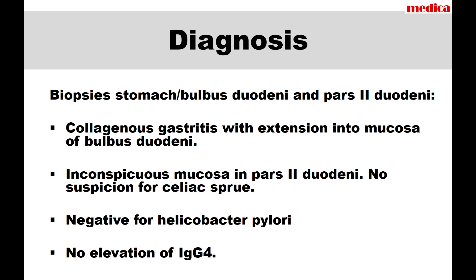In conclusion, our diagnosis was collagenous gastritis extending into the bulbar duodenum. Mucosa in pars II of the duodenum was inconspicuous without indication for celiac sprue. It was negative for Helicobacter pylori, with no elevation of IgG4. Ileum and colon mucosa were totally normal.